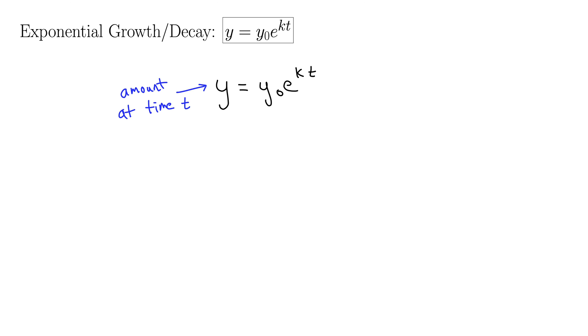So it could be money, it could be population, it could be the amount of drugs in one's system. All these things are exponential growth or decay, radiation, etc.